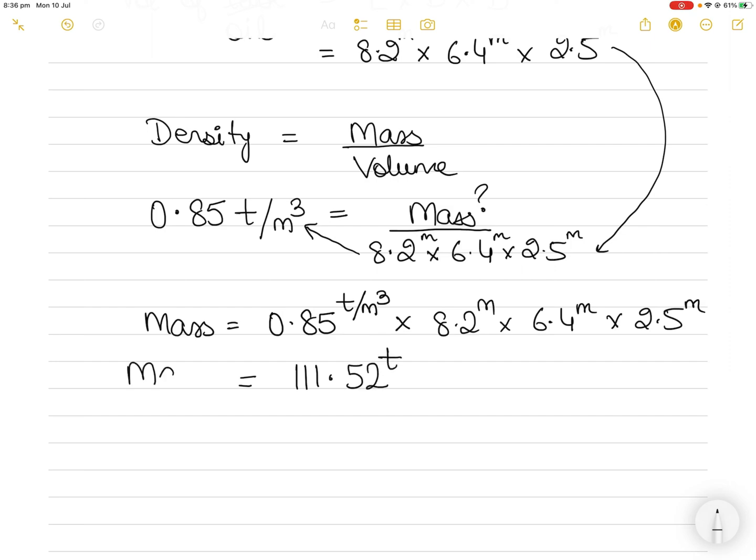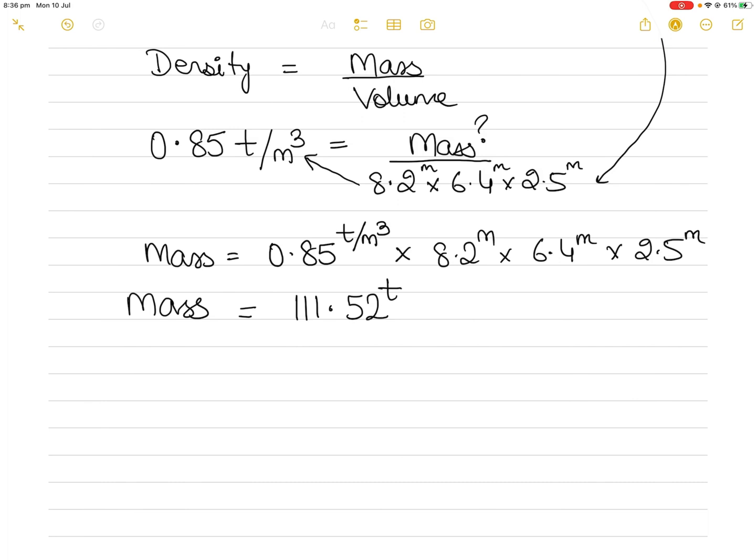Now remember the unit of mass here is tons and of course because when you multiply volume by density. So in this case remember you are multiplying volume by density. You are multiplying meter cube by tons per meter cube. So meter cube cancels out meter cube and the only remaining unit is tons. So this is the unit of mass.